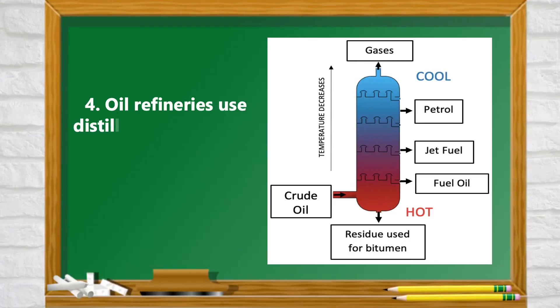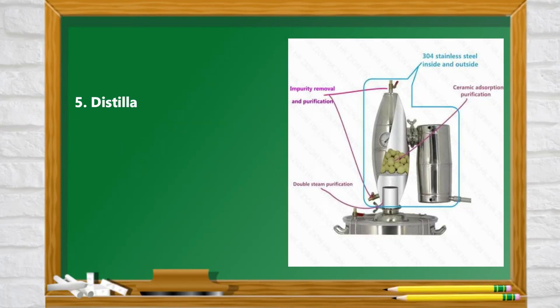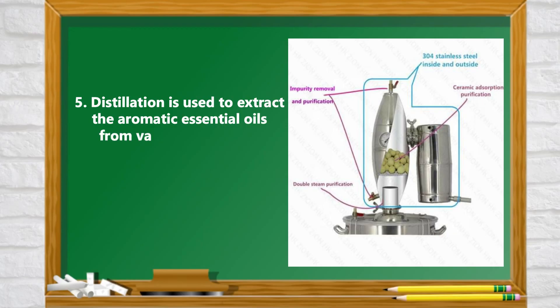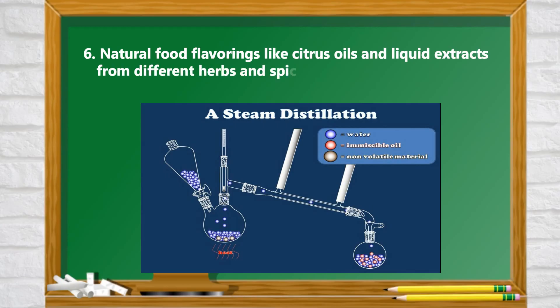5. Oil refineries use distillation to separate petrol and diesel from crude oil. 6. Distillation is used to extract the aromatic essential oils from various plants and herbs which are used to make perfumes. 7. Natural food flavorings like citrus oils and liquid extracts from different herbs and spices are results of the use of steam distillation.